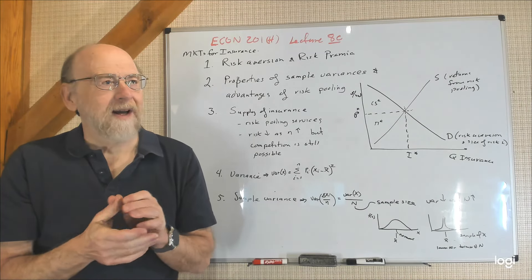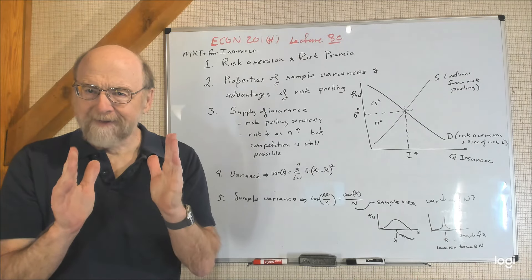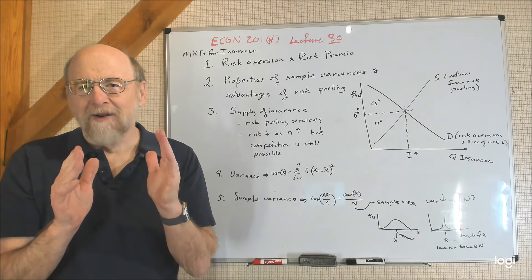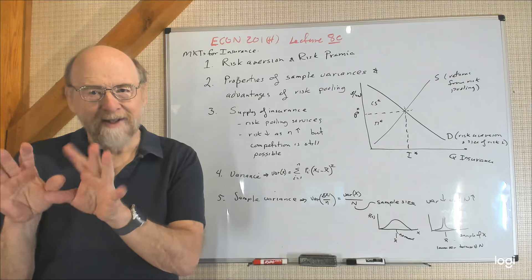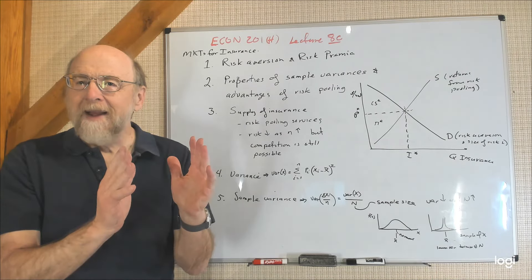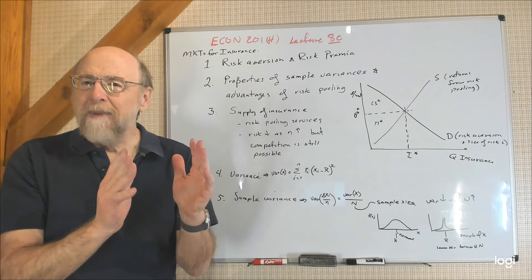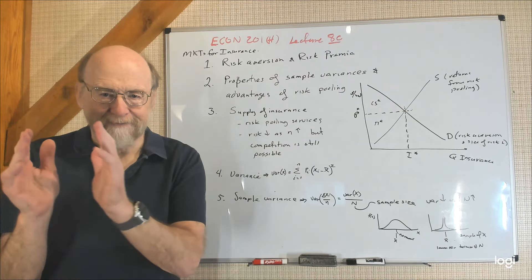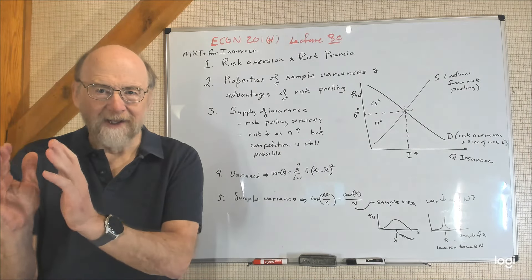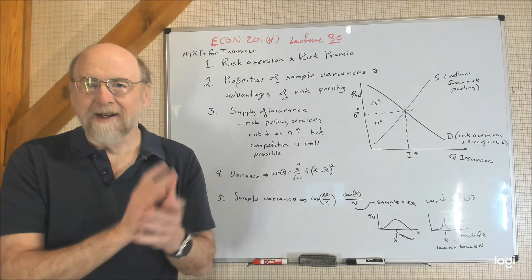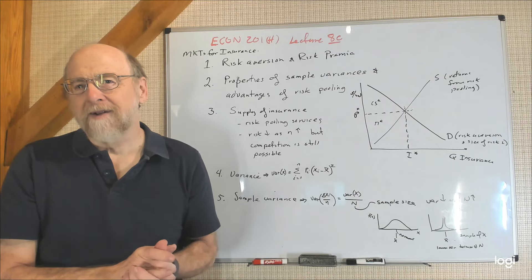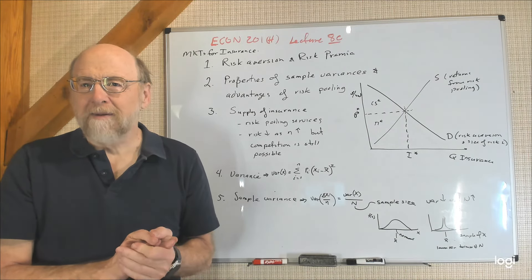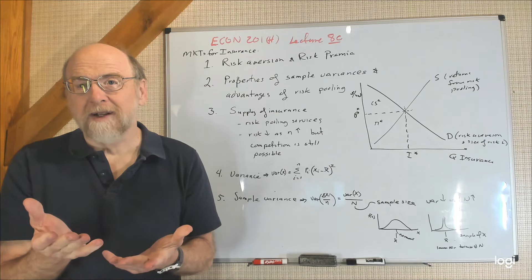If I prefer a certain payoff that has a value less than the expected value of some risky choice, then I'm willing to pay the difference between the expected value of that risky choice and the certainty equivalent. That risk premium means that people are willing to pay for insurance.